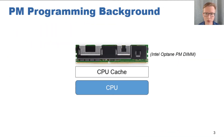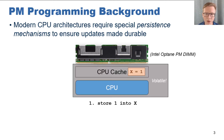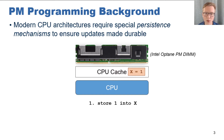Using persistent memory as durable storage requires using special persistence mechanisms, or durability mechanisms, to ensure updates to persistent memory become durable. Let me demonstrate. Let's say we want to make X a persistent value. First, we issue a store to X. This creates an update that becomes cached in the CPU cache. However, we don't want to leave this update in the CPU cache, since it is volatile, and a crash would cause the update to be lost. Therefore, we need to issue a flush instruction, which tells the CPU to write the update back to the backing storage device, which in this case is persistent memory.